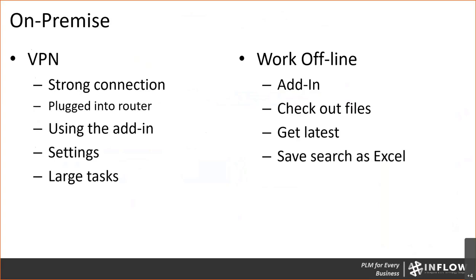When we're talking about on-prem, the first option is VPN. Those of you who have been working remotely over the last year with the pandemic have probably experienced at least one of the two ways of doing business. VPN is a pretty strong connection, and don't forget there's also the option of working offline. We're going to discuss both in a bit more detail.